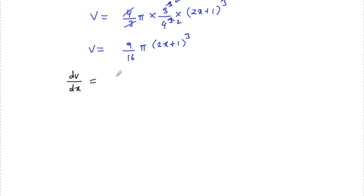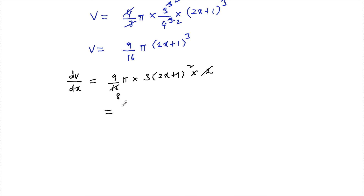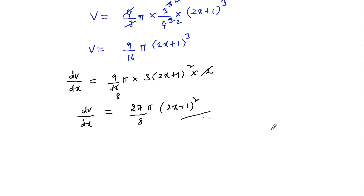dV/dx = (9/16)π × 3(2x + 1)² × 2, by the chain rule — since the differentiation of (2x + 1) gives 2. Simplifying: 9 × 3 × 2 / 16 = 27/8, so dV/dx = (27π/8)(2x + 1)². This is our answer.